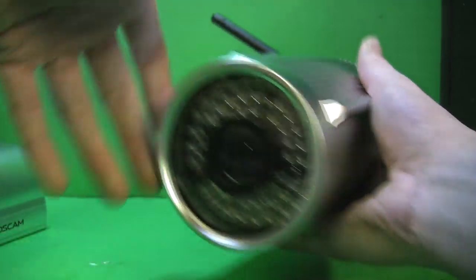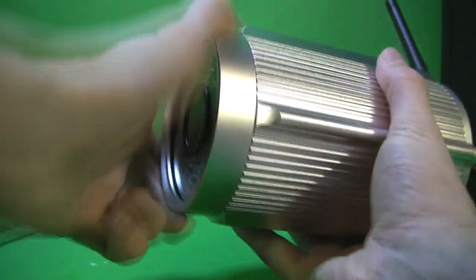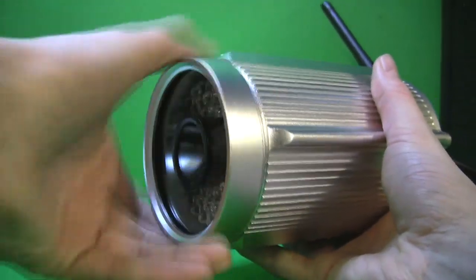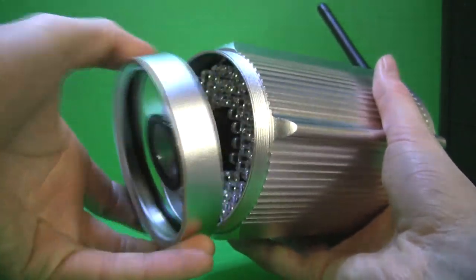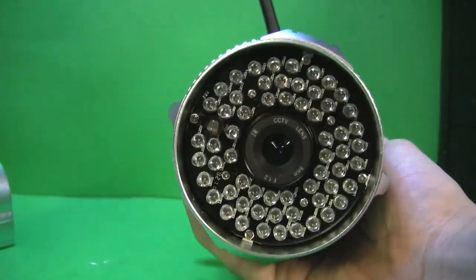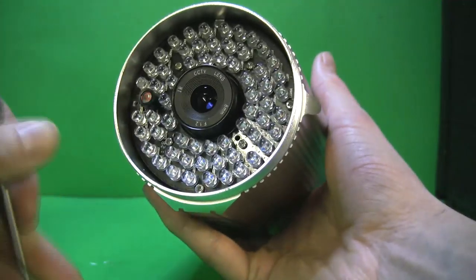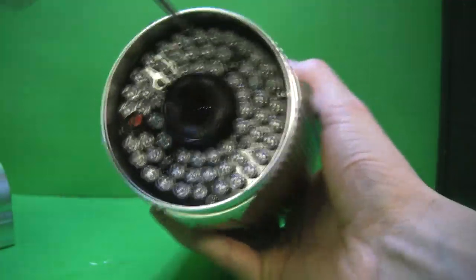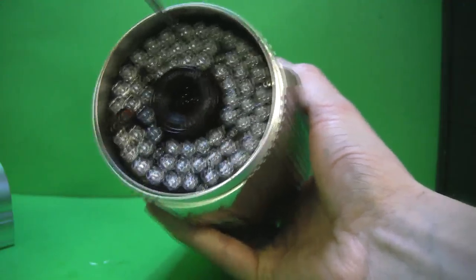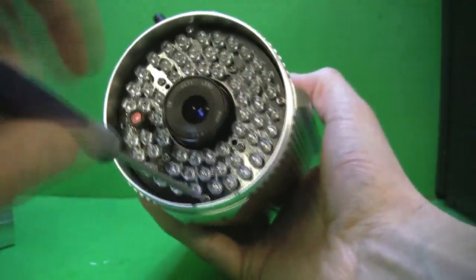Once you have the sunshade off, then unscrew the lens cover. You'll now see four screws on the outside. Those four screws are the first ones you remove which will allow the whole infrared board and the lens to come out.